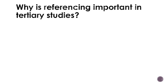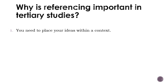The next question we want to answer is: why is referencing important in tertiary studies? At school, you might have been asked to include a bibliography at the end of an essay — this can be considered a very basic form of referencing. However, at university level it becomes far more important. There are a few reasons why referencing is important. Firstly, you need to place your ideas within a context. You are not the first student to ever study teaching. You might have opinions on an aspect of teaching such as homework, but these ideas need to be placed within a context.